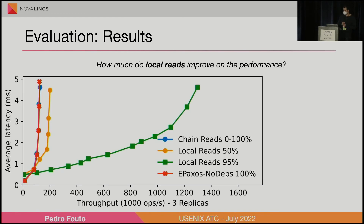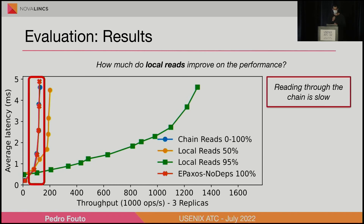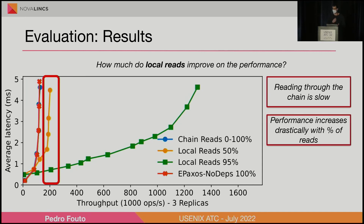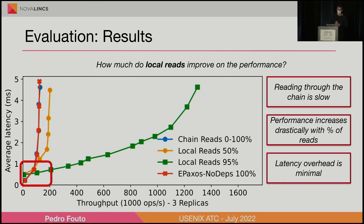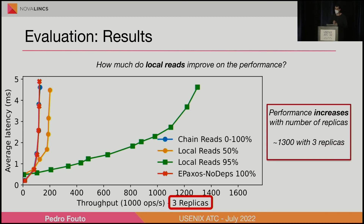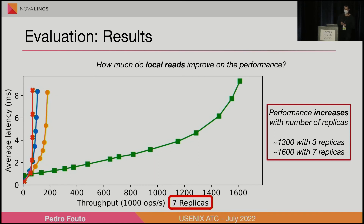Regarding local reads performance, we tested the performance of executing reads through the chain versus executing reads using our local linearizable reads protocol — with 50% reads and then with 95% reads — and the results are pretty satisfactory. The latency overhead is actually quite small. Another interesting aspect is that since reads do not require any extra communication, by increasing the number of replicas we actually increase the number of reads we can execute — with three replicas around 1,300, and with seven replicas we get to almost 1,600.